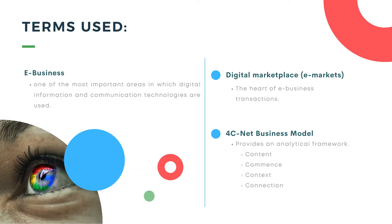Here are terms that will be used throughout the presentation. E-Business: one of the most important areas in which digital transformation and communication technologies are used — the conduct of business procedures over the internet. Digital Marketplace, or e-Markets: in the same way that supply and demand collide in the traditional economy, the digital marketplace is the heart of e-business transactions.